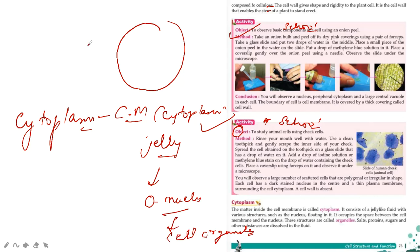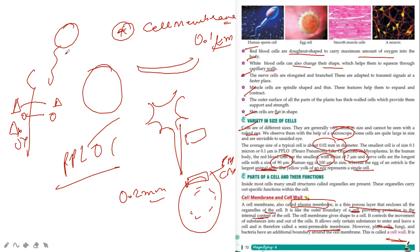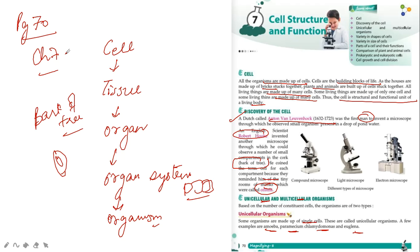So students, today we read up to page number 73. You will cover 73, 72, 71 and 70. You will read this page. And if you people have any doubt, you can ask me anytime. But read line to line because this chapter is important for your 9th class also. Thank you.